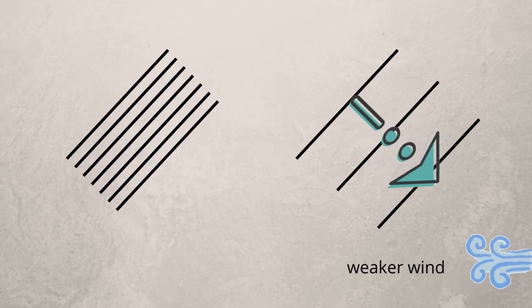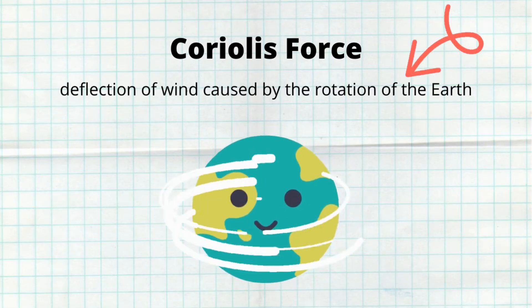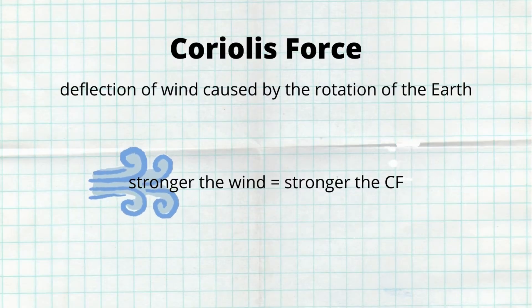The next concept that plays a major role in the movement of air around our globe is Coriolis force. Coriolis force is the deflection of wind that is caused by the rotation of the earth. Coriolis force is strongest at the poles and weakest at the equator — in fact, there is actually no Coriolis force five degrees north and south of the equator. The stronger the wind, the stronger the Coriolis force will be.